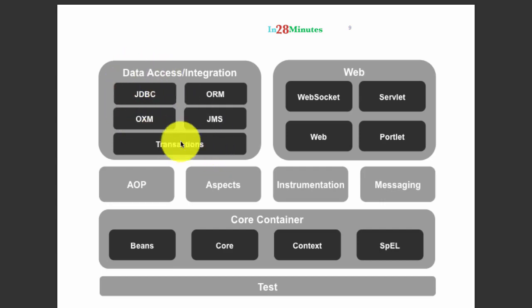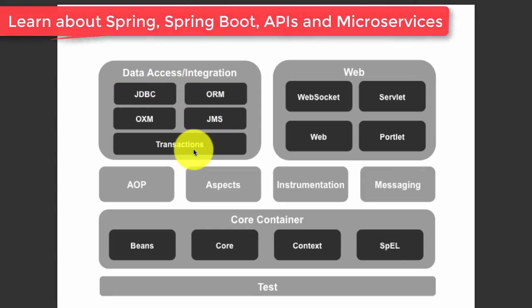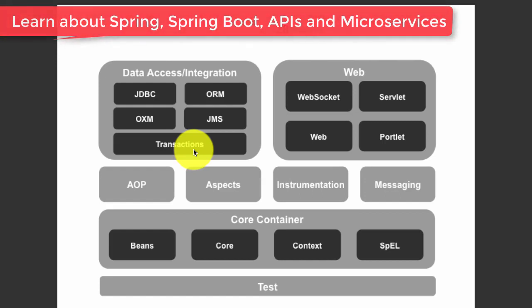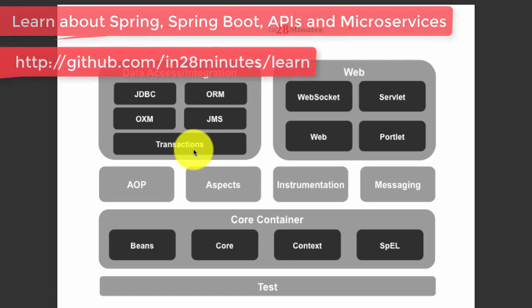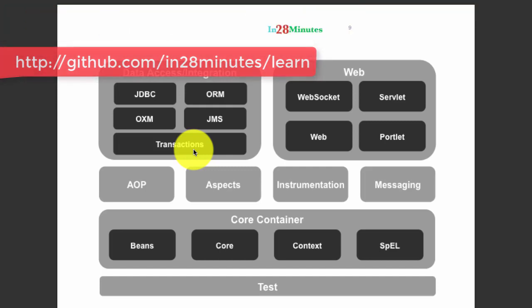One of the important things with data access or integration is transaction management. You'd want all the steps in a transaction to be successful, or you'd want all of them to be rolled back. For example, if a transaction involves four steps and the third step fails, you'll want to roll back the first two steps as well. Spring has great support for transaction management.